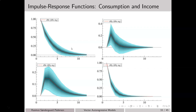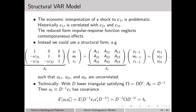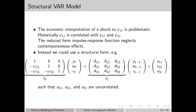One drawback of this analysis is that the impulse responses do not capture any instantaneous or contemporaneous effects. For instance, if there is a shock in the consumption equation, this does not carry over instantaneously to the income equation — it is simply ignored. This might be problematic because the error terms are typically correlated, and this correlation is captured by the omega matrix.